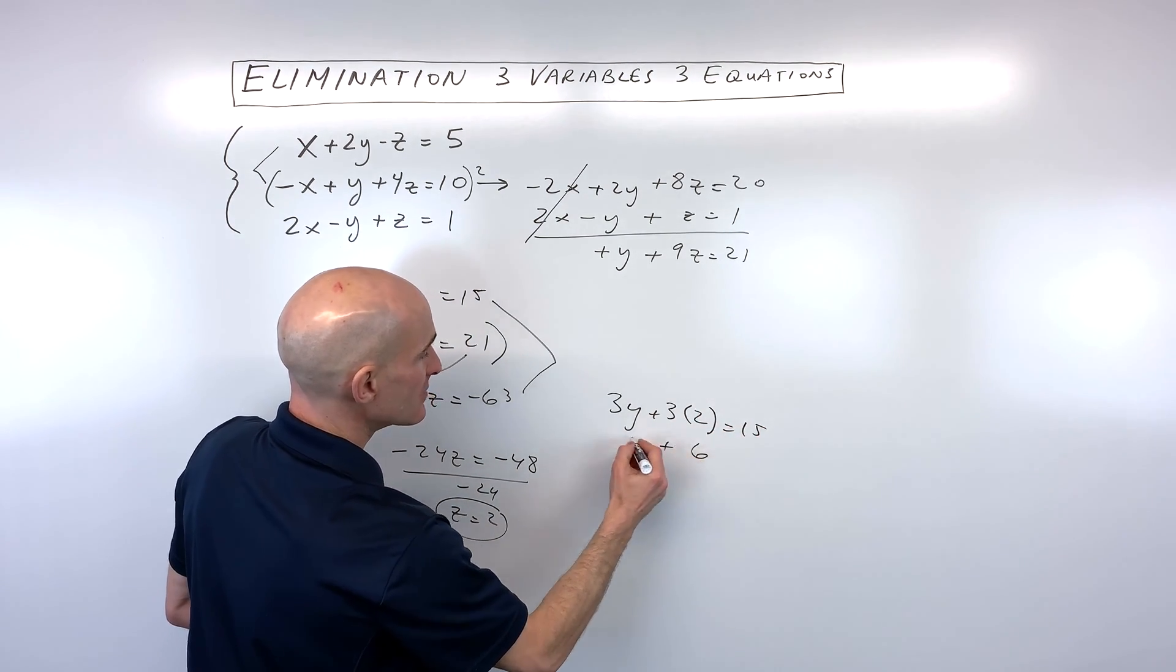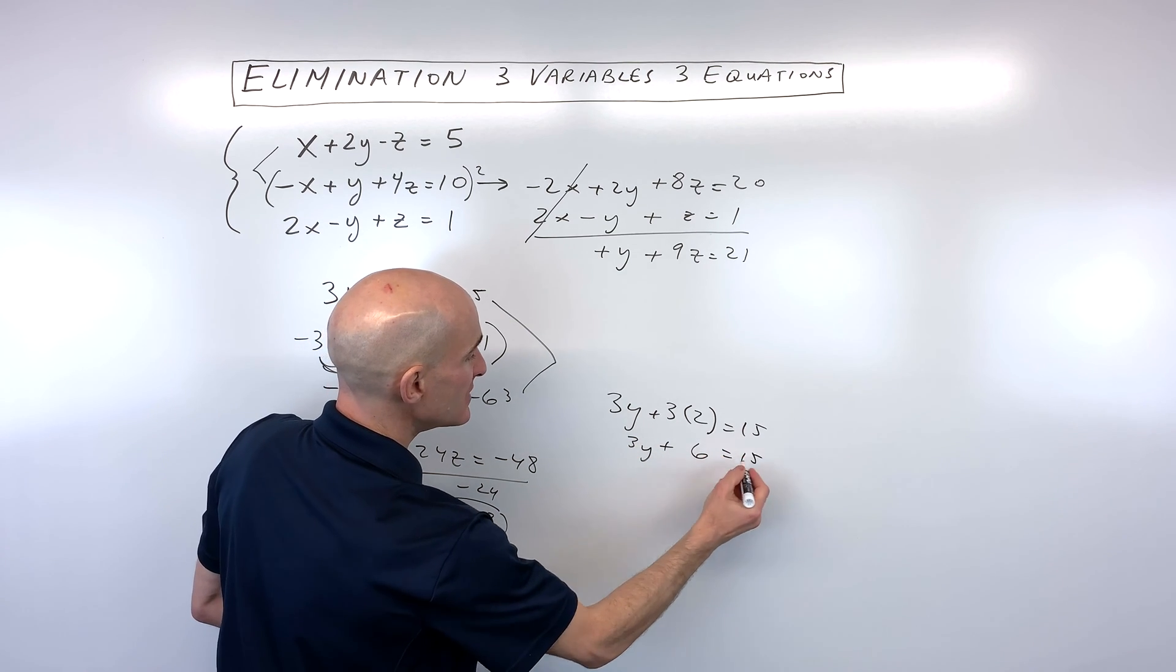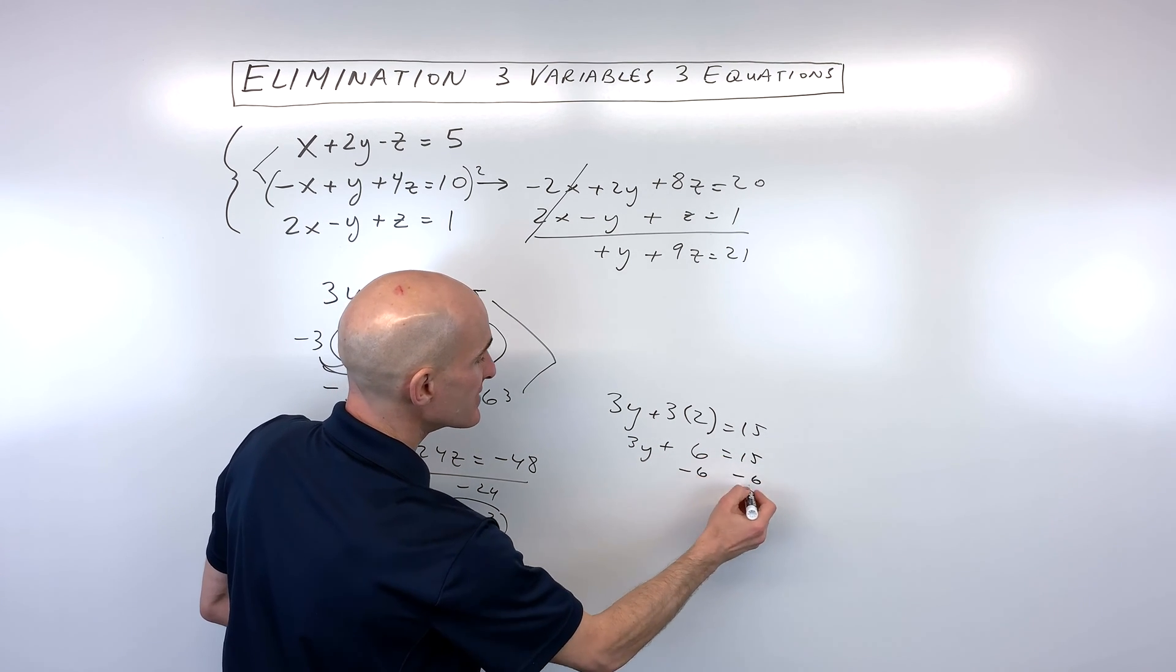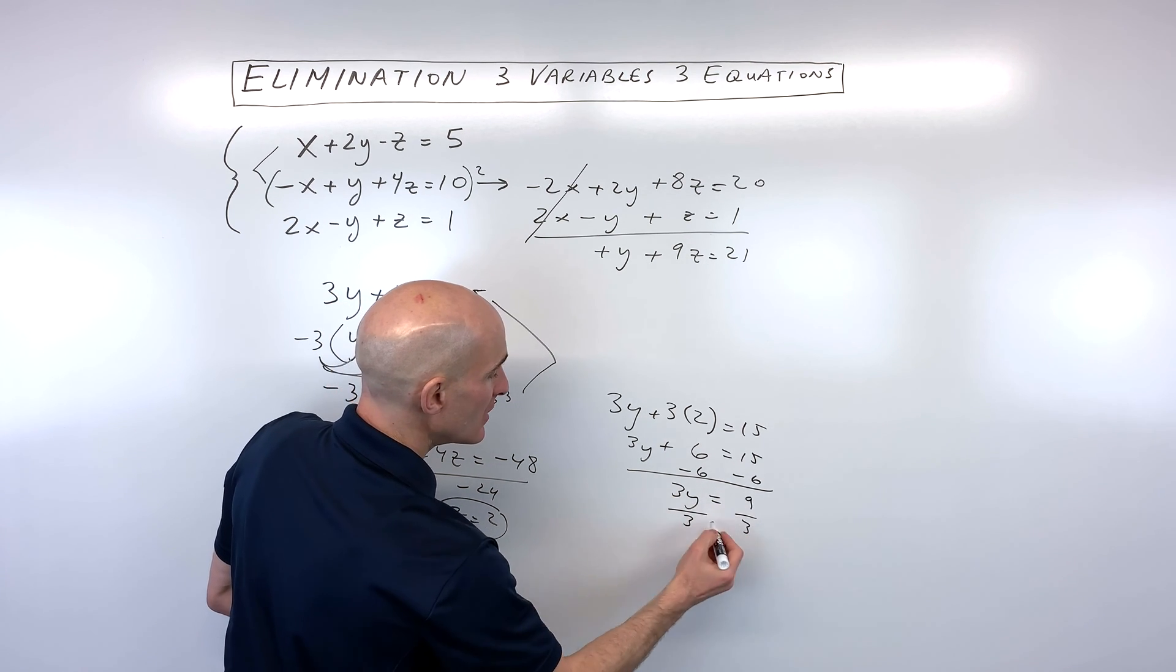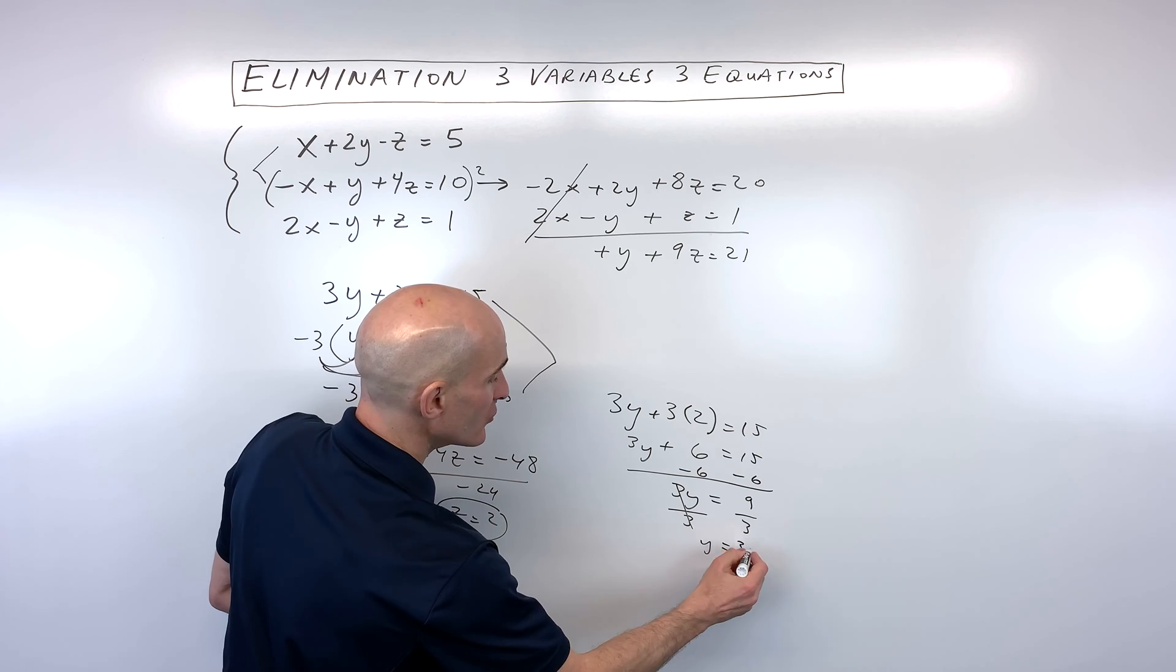And that comes out to 6 plus 3y equals 15. If I subtract 6 from both sides, that gives us 9. And if we divide both sides by 3, you can see that y is equal to 3.